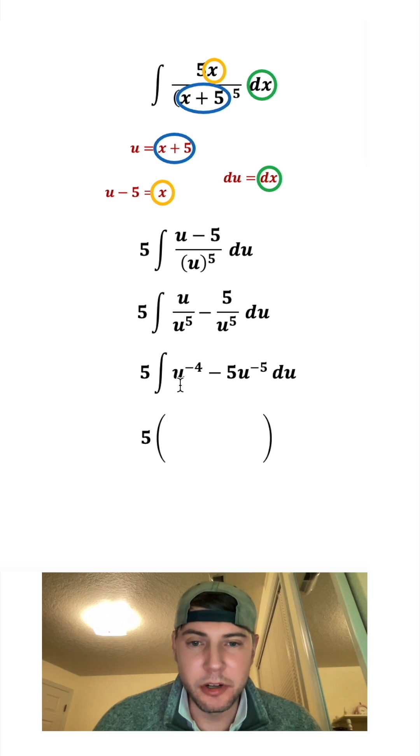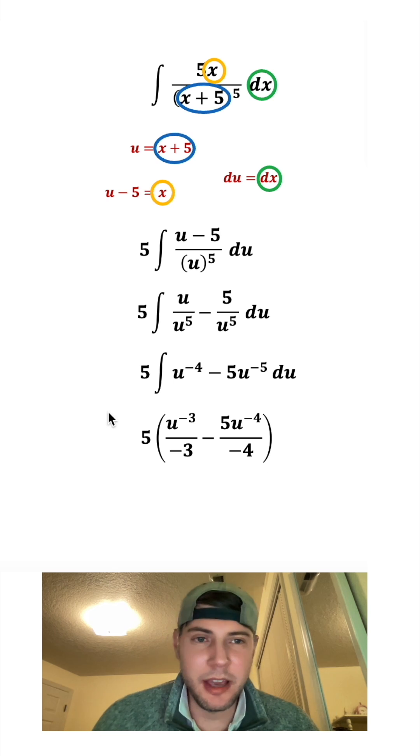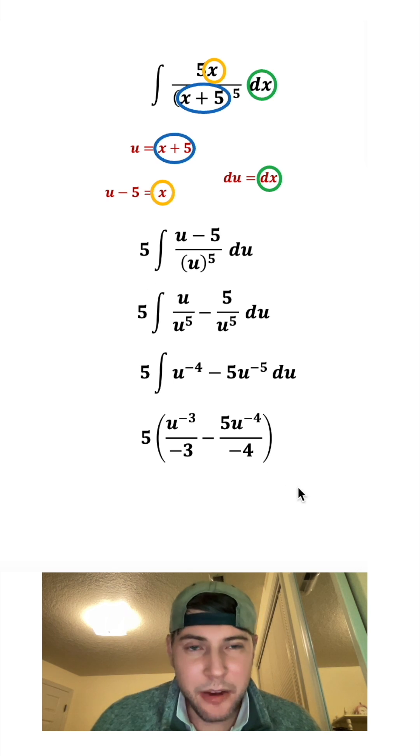Now when we take the antiderivative, we're going to do u to the negative 4 plus 1, which gives us negative 3. And then we're going to divide that by negative 3. And then we're going to subtract this. And we're going to add 1 to the negative 5, which gives us negative 4. And then we're going to divide by that negative 4. And then since it is an indefinite integral, we can't forget the plus c.